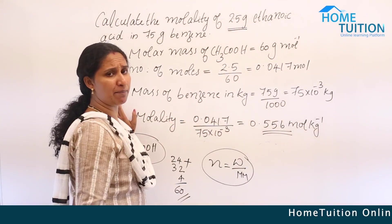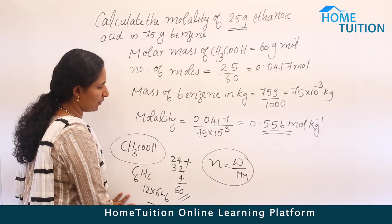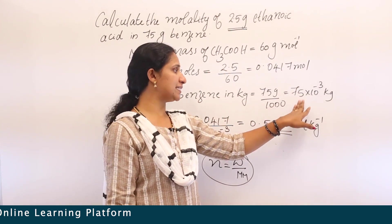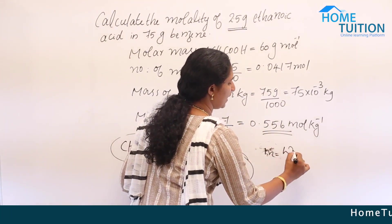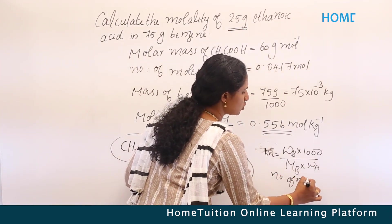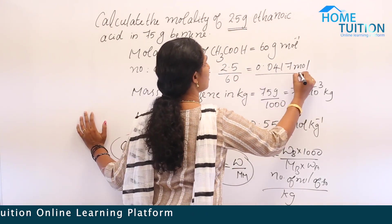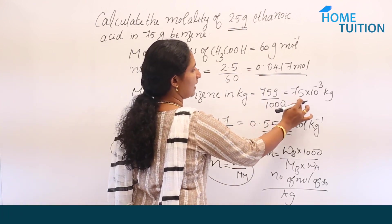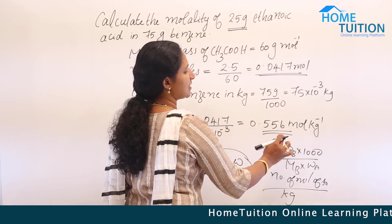Mass of benzene in kilograms: 75 grams divided by 1000 = 75 × 10⁻³ kg. Molality equals number of moles of solute divided by mass of solvent in kilograms: 0.0417 divided by 75 × 10⁻³ = 0.556 moles per kilogram.